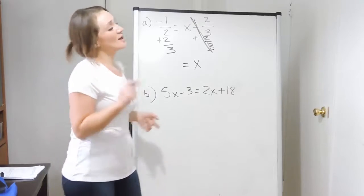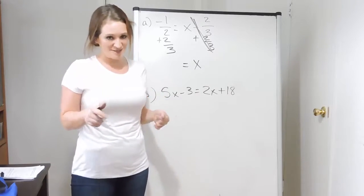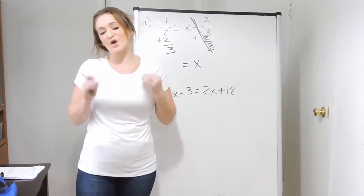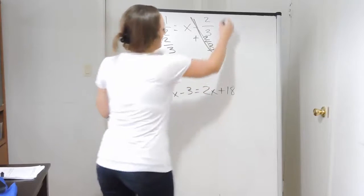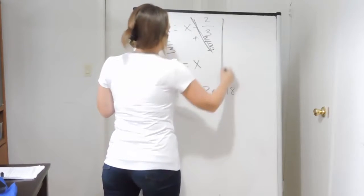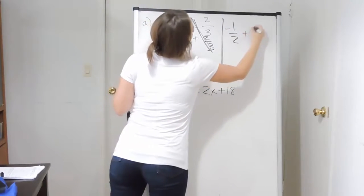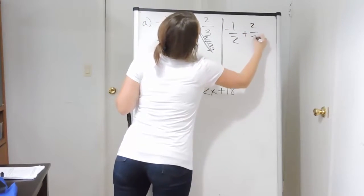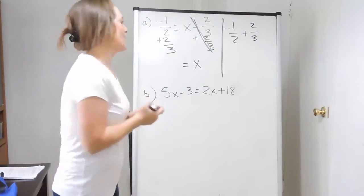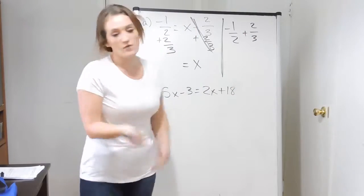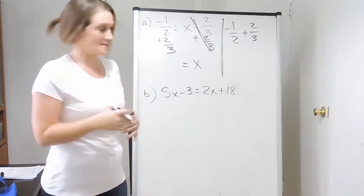And if you remember, you cannot add or subtract fractions unless you have common denominators. So I'm going to write this off to the side: negative one half plus two thirds. We need to get common denominators for those and go through that process.